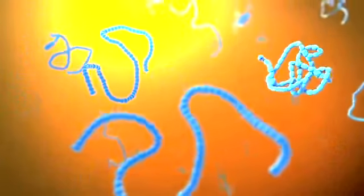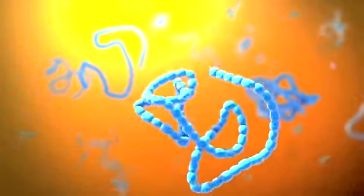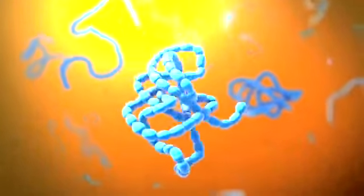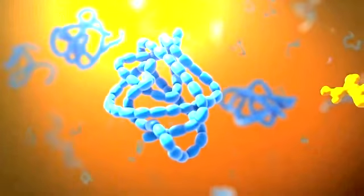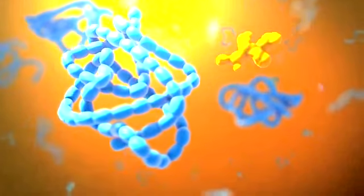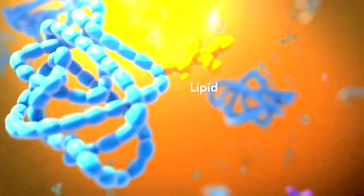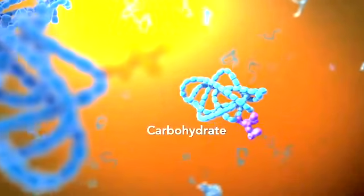As proteins move through the Golgi body, they're customized into forms that the cell can use. The Golgi body does this by folding the proteins into usable shapes, or adding other materials onto them, such as lipids or carbohydrates.